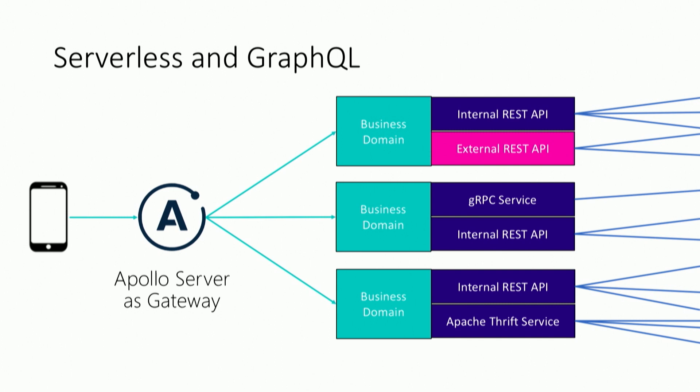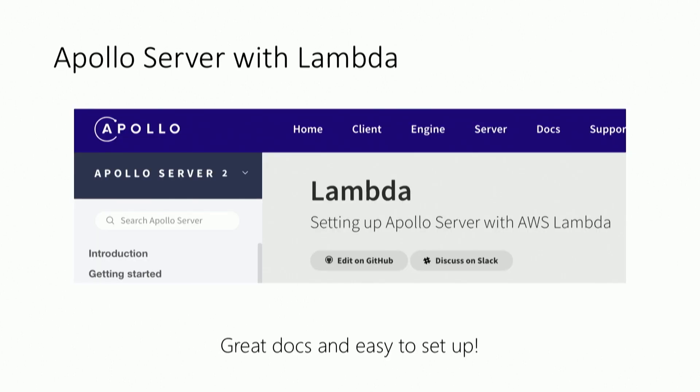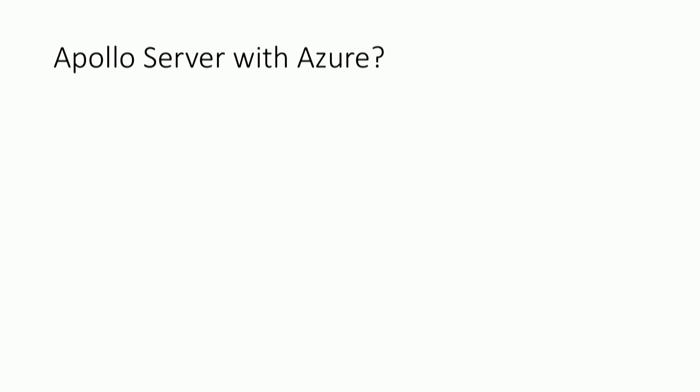One place serverless does shine: we've had talks about GraphQL at the gateway, and with Apollo Server potentially stitching together other GraphQL services. Serverless has a really nice place inside of this. There's great documentation on AWS Lambda, and the Serverless Framework has great stuff for AWS. But serverless seems like it's mostly AWS's space right now. What about Azure? Raise of hands — how many people have used Azure? That's about a third of the room, so there's definitely something there. So why not Azure Functions?